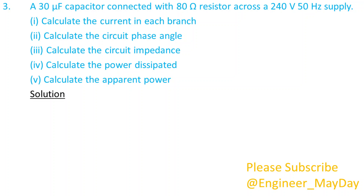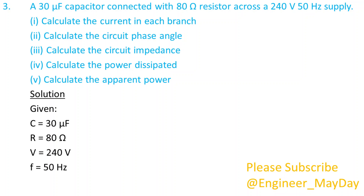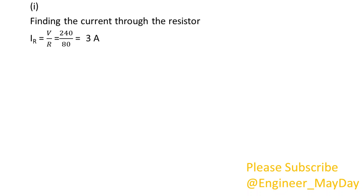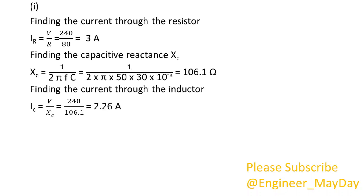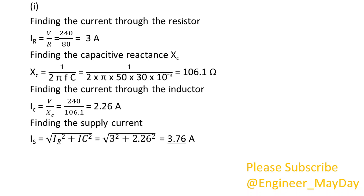Solution. Given: C equals 30 microfarads. R equals 80 ohms. V equals 240 volts. F equals 50 hertz. 1. Finding the current through the resistor — IR equals 3 amperes. Finding the capacitive reactance XC — XC equals 106.1 ohms. Finding the current through the capacitor — IC equals 2.26 amperes. Finding the supply current — IS equals 3.76 amperes.